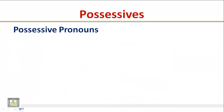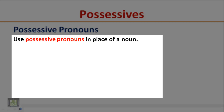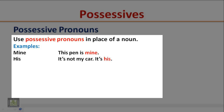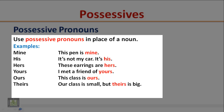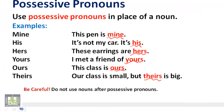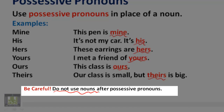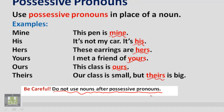Possessive pronouns: use possessive pronouns in place of a noun. Examples: This pen is mine. It's not my car, it's his. These earrings are hers. I met a friend of yours. This class is ours. Our class is small, but theirs is big. Notice that possessive pronouns are used in place of a noun, so they are not followed by a noun. Be careful: do not use nouns after possessive pronouns.